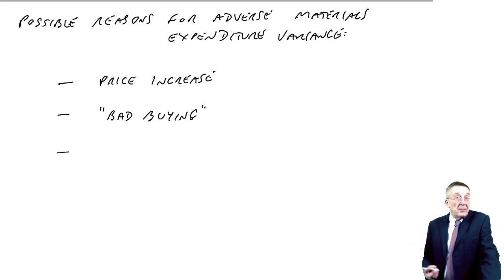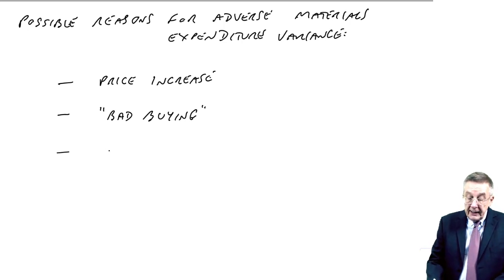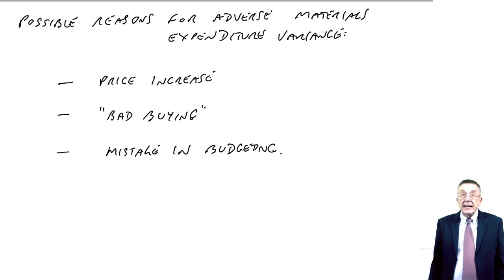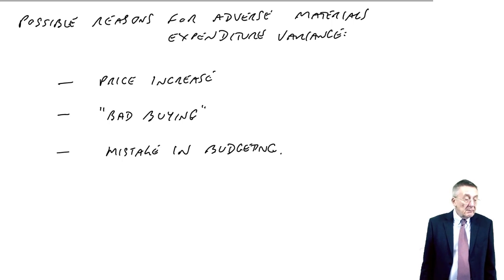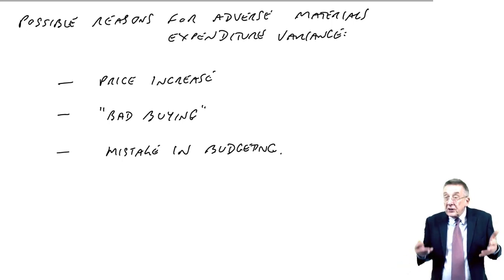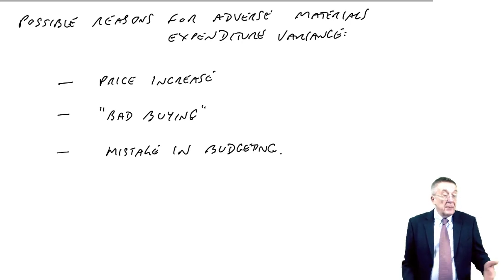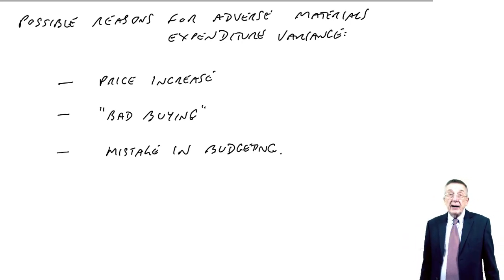What else? This might seem a silly one, but it's possible. It could simply have been a mistake in the budget. When we had the budgeting lecture, I said that however hard we try, people do make mistakes. And maybe the price never was $4.50. Maybe it was a mistake. The price was $4.60 and we should have put $4.60. We've made a mistake, obviously. If we put too low a price in, we're getting the adverse variance. And it's not the purchasing manager's fault. $4.50 was never realistic.